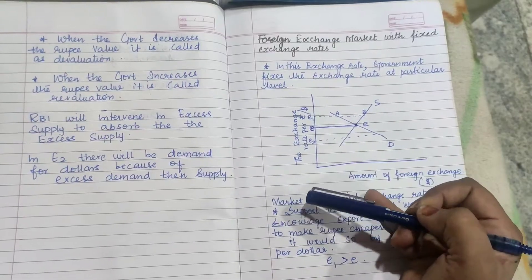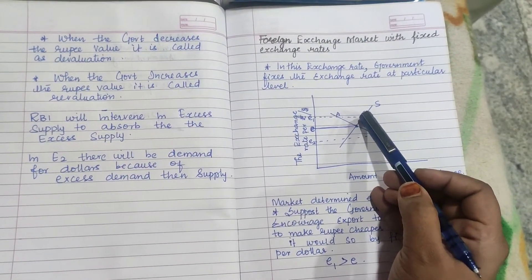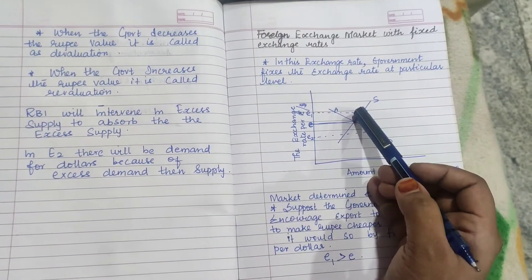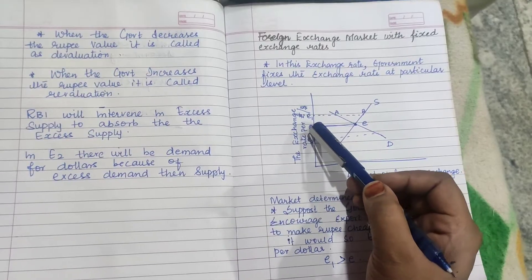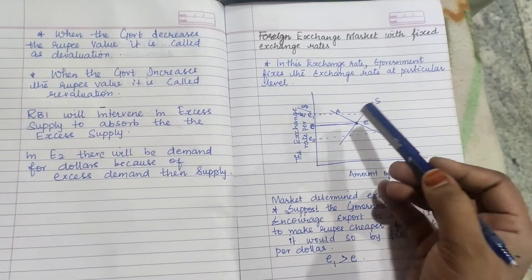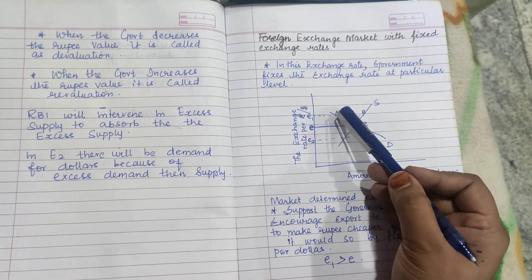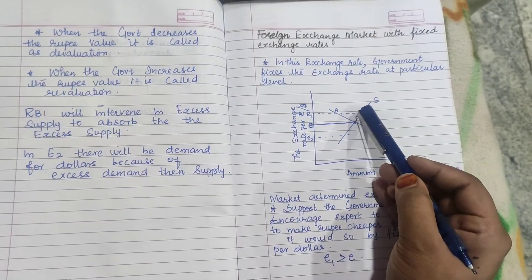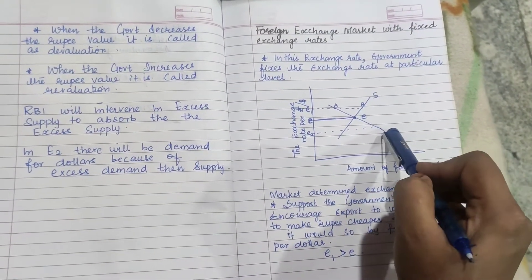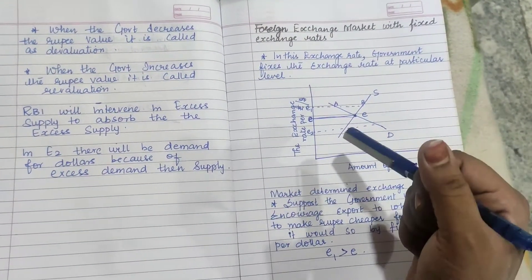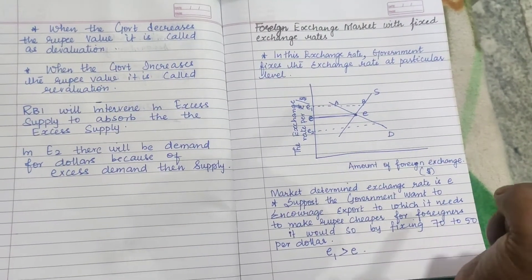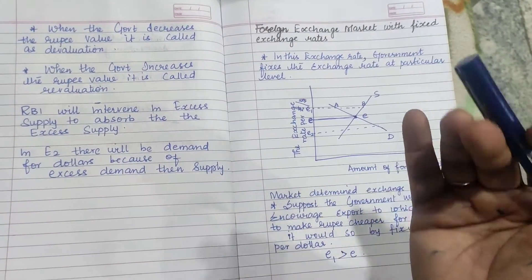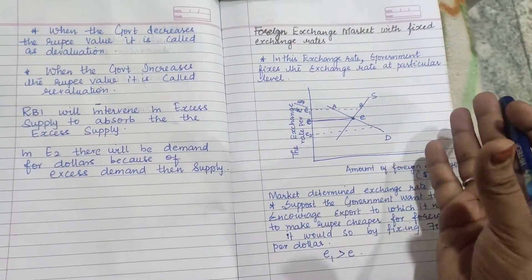By setting this new higher rate, the equilibrium shifts from E to E1. At E1, demand for dollars will be less and supply will be more, creating an excess supply of dollars. The RBI will then intervene to purchase the dollars in exchange for rupees, absorbing that excess supply.